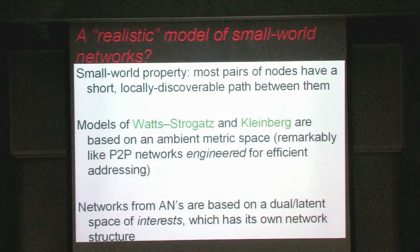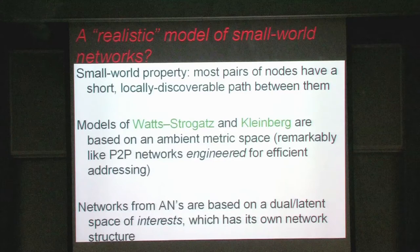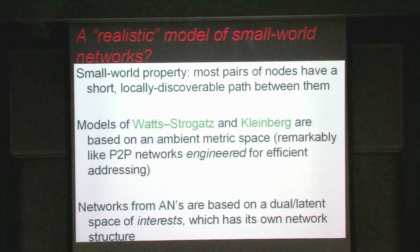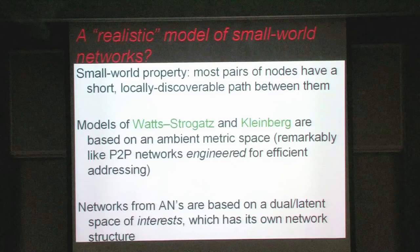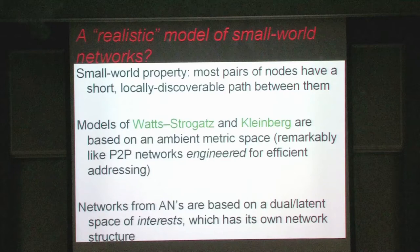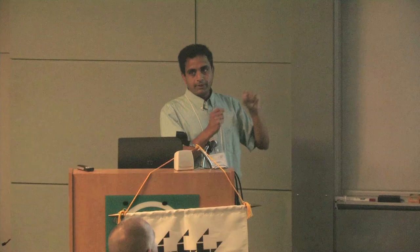These models look a lot like models of peer-to-peer networks that were actually engineered for efficient content retrieval — where you are a node wishing to obtain content from some other node and there's a natural notion of discovering a path to that node. There seems to be a remarkably nice confluence happening among various models, some that were engineered and some that were purely mathematical. What we did is produce networks from affiliation networks based on a dual or latent space of interests, which has its own network structure. The way we defined the affiliation network, a new node shows up and copies from a prototype noisily, creating connections between a node and its prototype.